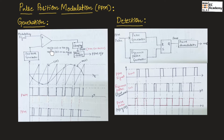If the message signal is greater than the carrier signal, it will produce positive voltage, and if the message signal is less than the carrier signal, it will produce negative voltage.